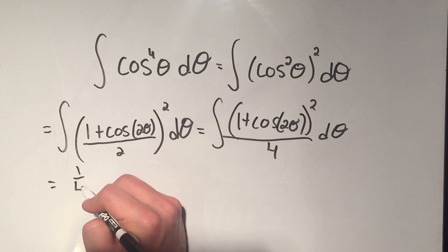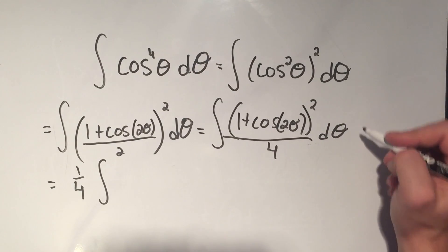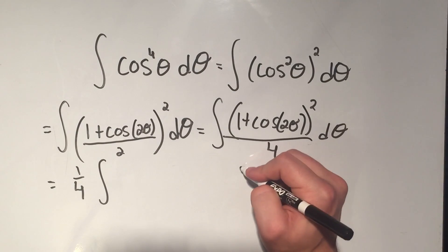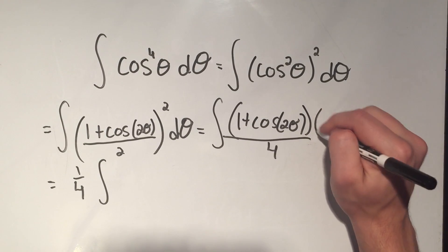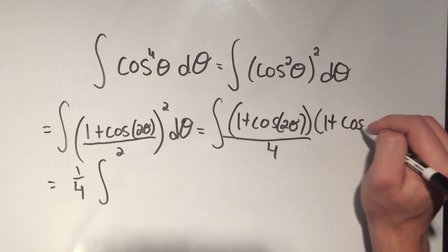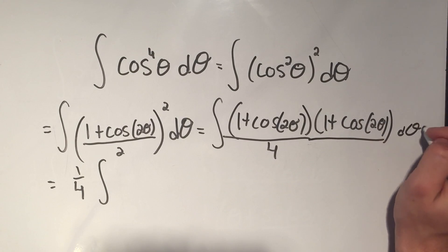So I'll pull out that 1 fourth. And then I'm going to have to foil this guy. So it's going to be 1 plus cosine 2 theta times 1 plus cosine 2 theta. So I can do my first inner outer last.